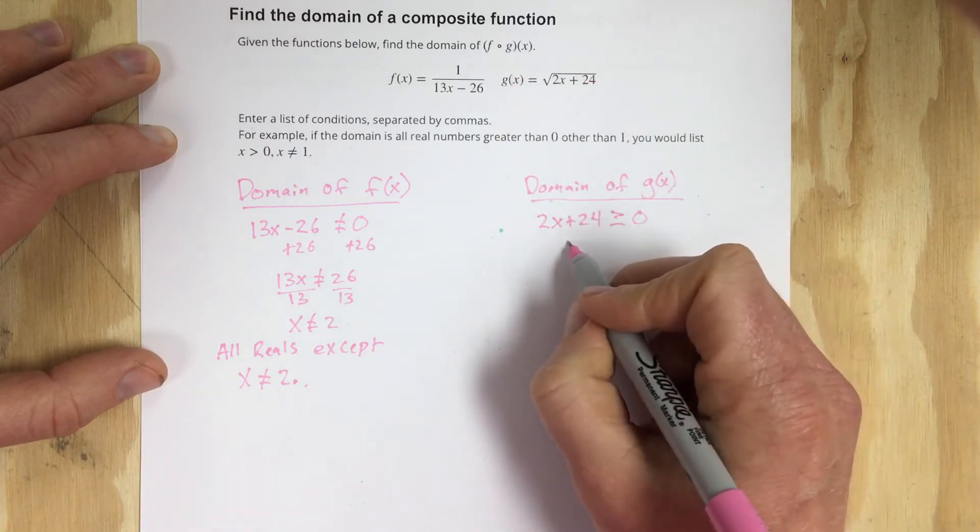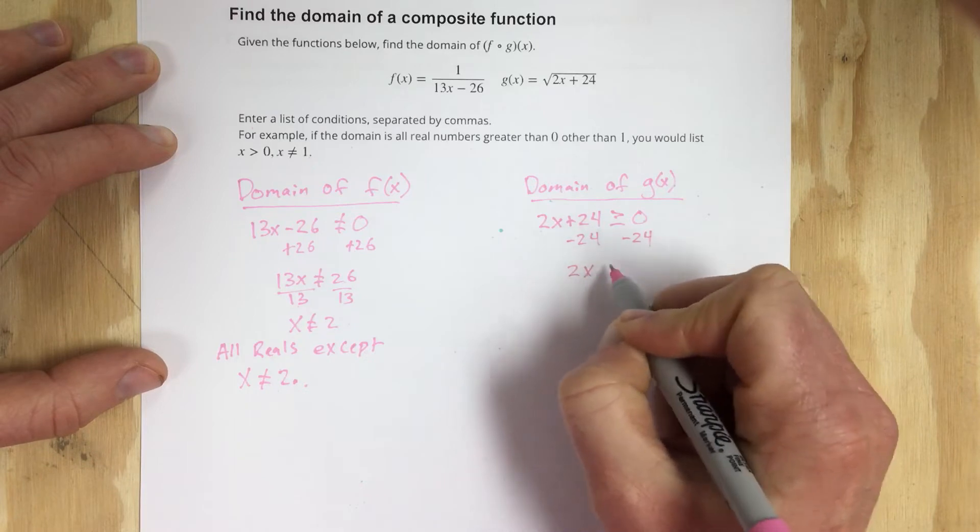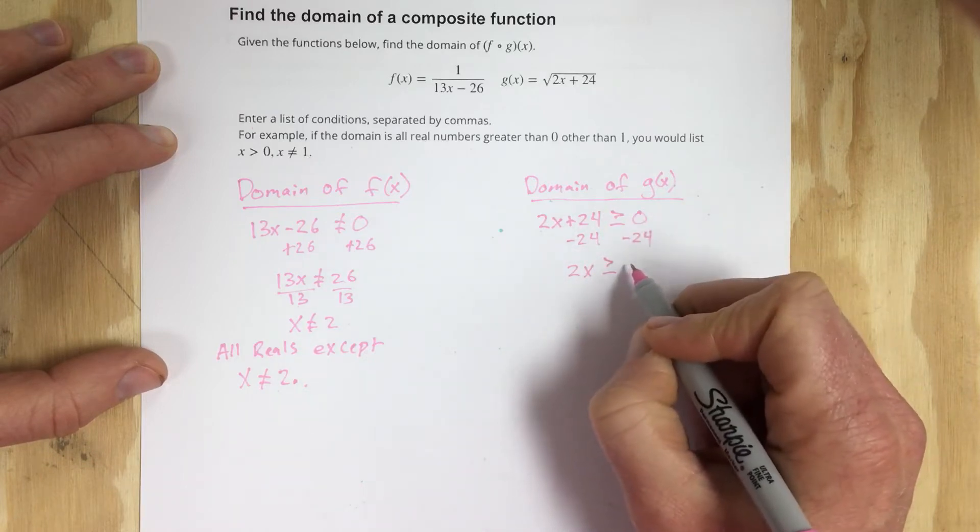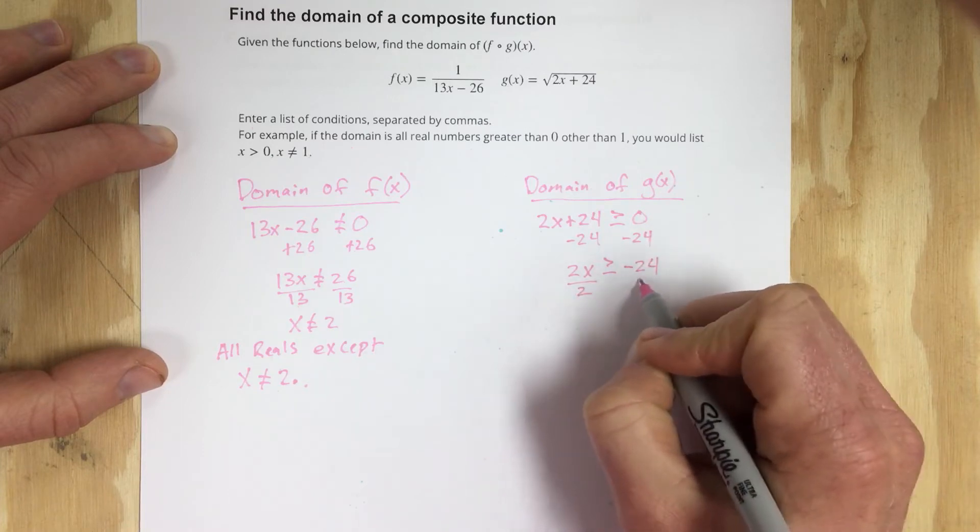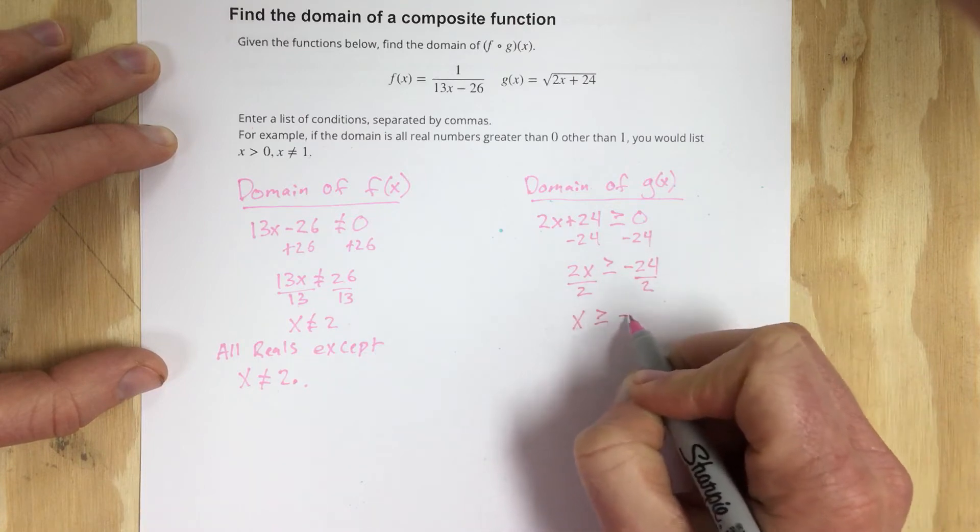We're going to do that by subtracting 24 on each side. We get 2x greater than or equal to negative 24, and then we're going to divide by 2 and we're going to get x greater than or equal to negative 12.